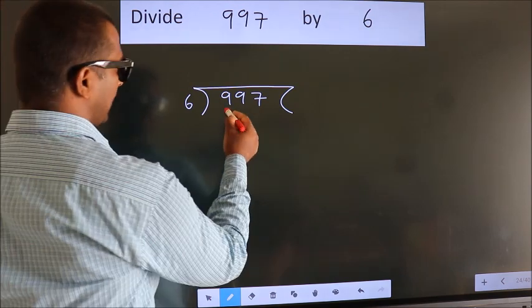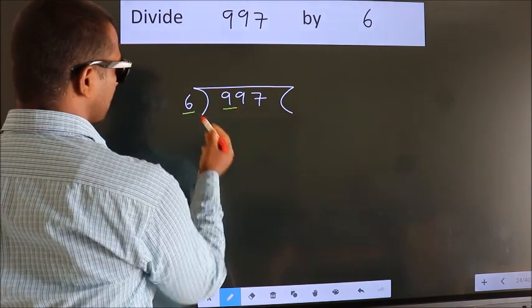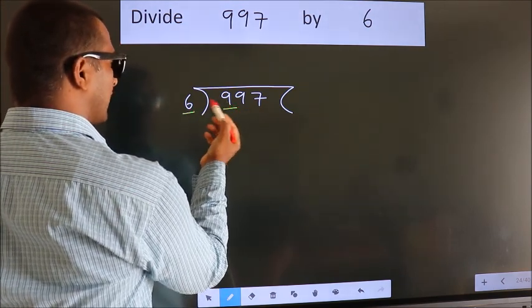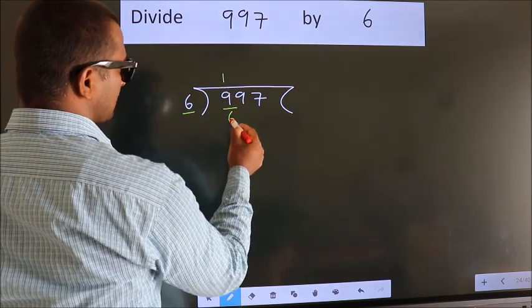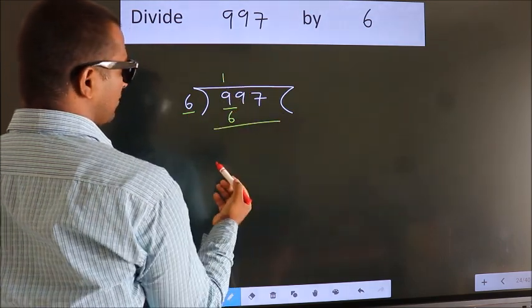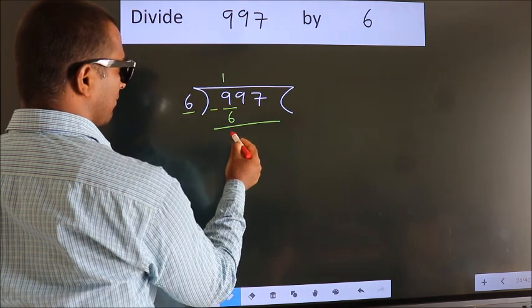here we have 9, here 6. A number close to 9 in the 6 table is 6 once, 6. Now, we should subtract. We get 3.